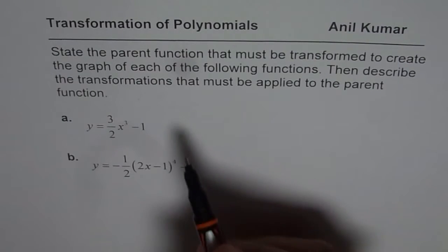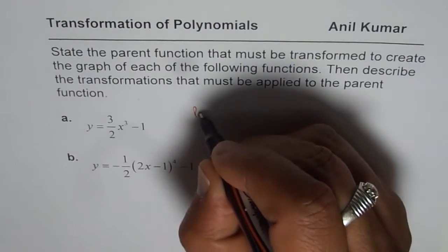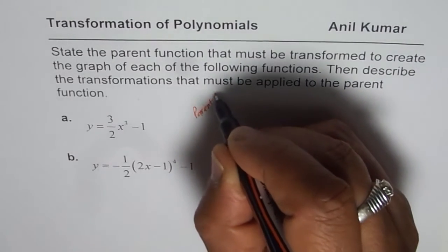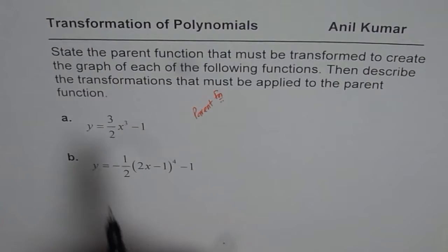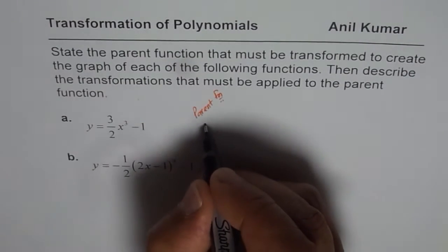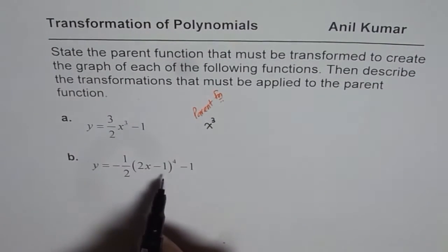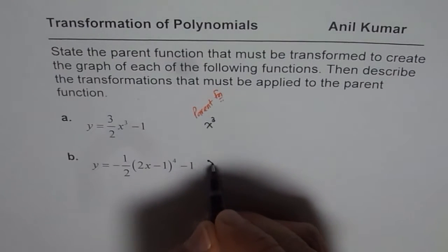Now first, let's write down the parent function. Parent function in this case is x cubed, cubic function. And in part b is x to the power of 4.